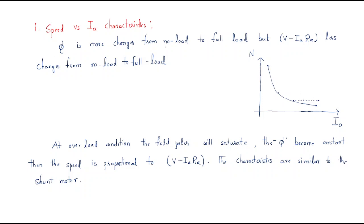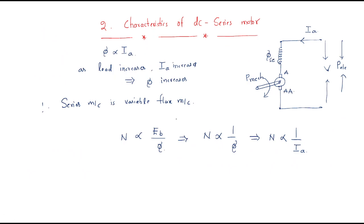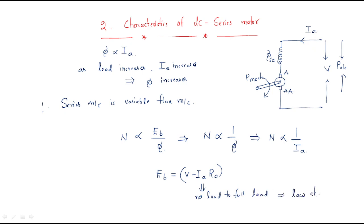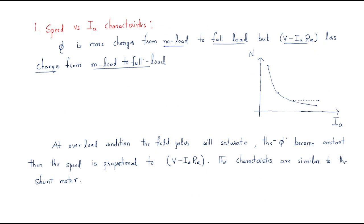Flux changes more from no load to full load, while V minus I_A R_A changes less from no load to full load. Therefore, approximately Eb, which is V minus I_A R_A, can be taken as constant. That is why we can directly write that speed is inversely proportional to flux, and therefore inversely proportional to armature current.